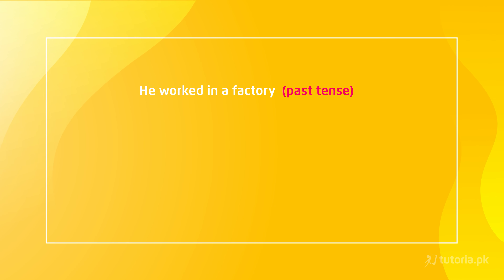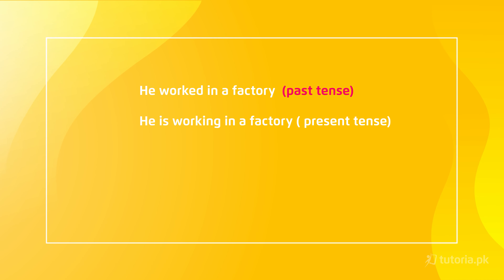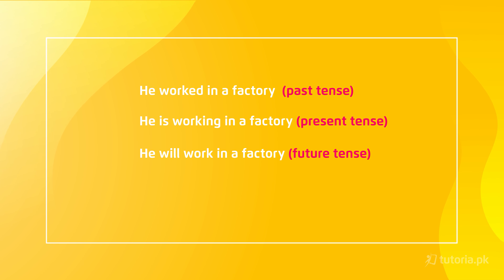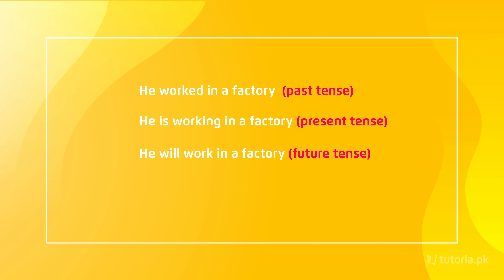For example: 'He worked in a factory.' Here 'worked' is the past form of the verb 'work', that's why it's a past tense sentence. Take another example: 'He is working in a factory' — and 'He will work in a factory.' The second one is present tense and the last one is future tense. Hume yee kaise pata chalta hai? Jab hum inke structure ko study karte hain, inki auxiliary verbs ko study karte hain, ya inki main verbs ko study karte hain, to hume time ka andazah ho jata hai. Yani time ye teeno cheezein batata hai: structure, main verb, and auxiliary verb.